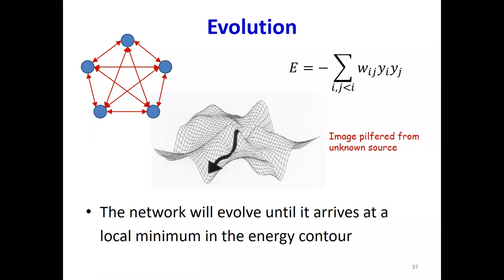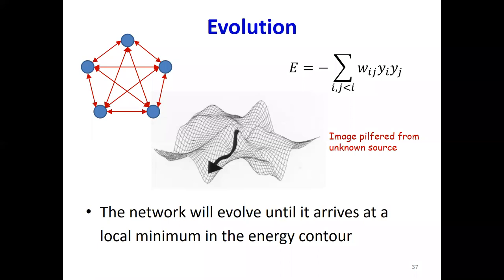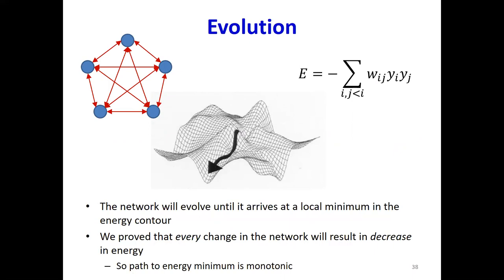Here's how the whole thing is going to behave. The network is going to have some energy at each state — meaning the configuration of neurons. If you have n neurons, the states the network can be in are at the corners of an n-dimensional hypercube, where every corner is represented by an n-component vector where every component is plus one or minus one. If you start off at some point, the network is going to begin evolving by flipping little bits, lowering the energy each time, and continue to evolve until it arrives at a local minimum in the energy contour.